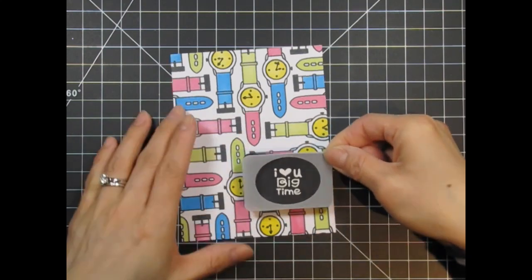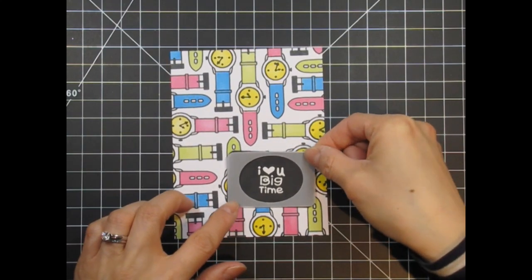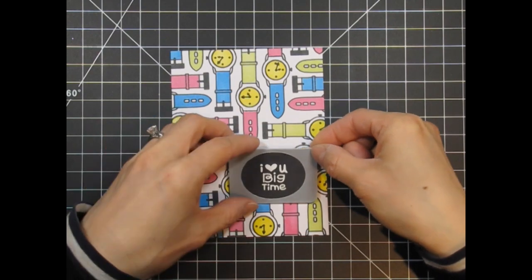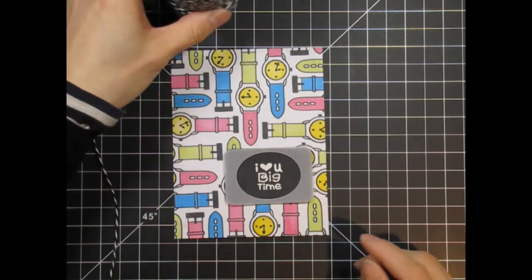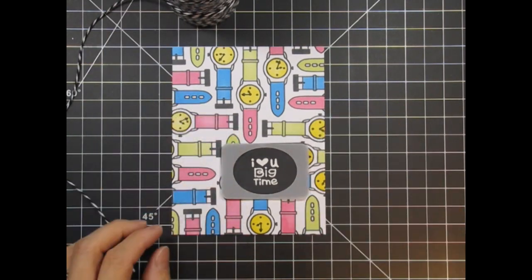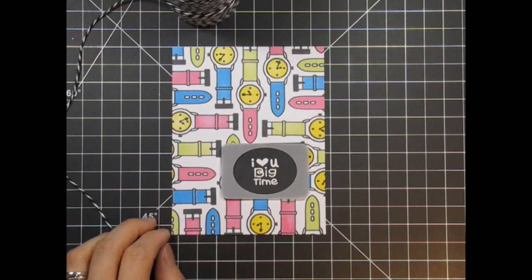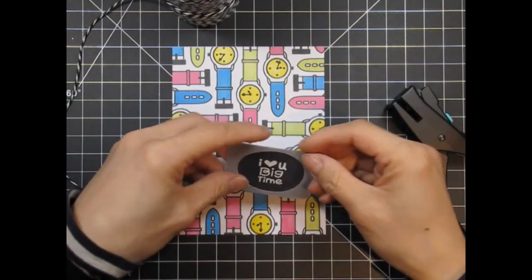Next, I'm going to assemble the layers, but first I'm going to punch a couple of holes to incorporate charcoal baker's twine from the twinery. I'm going to take my 1/8th hole punch and punch two little holes on either side of the oval.